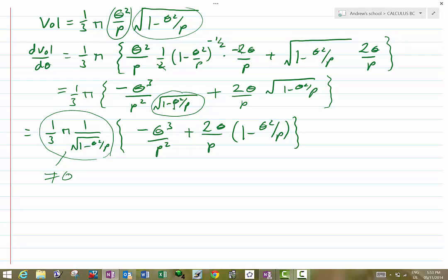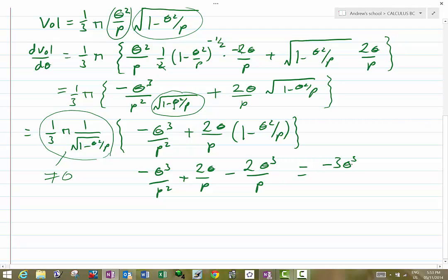So tidying the bracket up a little bit, I have minus theta cubed over p squared plus 2 theta over p minus 2 theta cubed over p squared. Or in other words, minus 3 theta cubed over p squared plus 2 theta p over p squared.